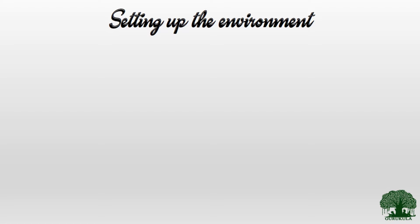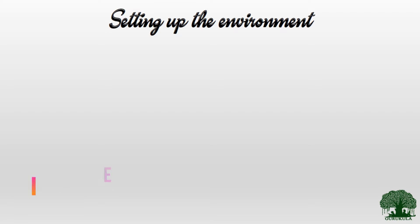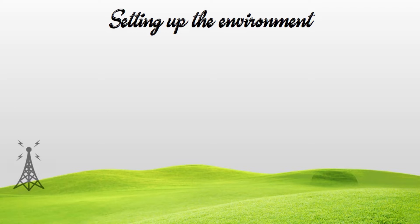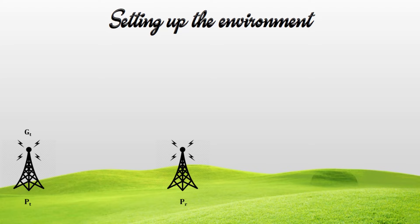By setting up the environment. To start off, we have to define certain variables in order to take our derivations further. We are going to consider a transmitting antenna and a receiving antenna. The transmitting antenna will have power PT and gain GT. Similarly, the power of the receiving antenna will be represented by PR, and the gain of the receiving antenna will be represented by GR. The distance between the transmitting antenna and the receiving antenna is represented by D.